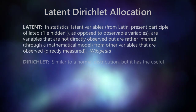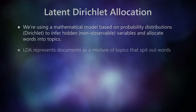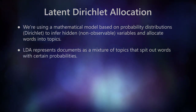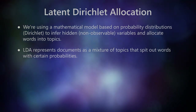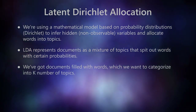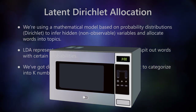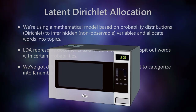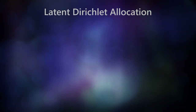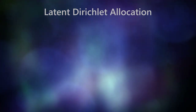So now let's put these words together to see what they mean. We're using a mathematical model based on probability distributions — Dirichlet — to infer hidden, non-observable variables and allocate words into topics. Specifically, LDA represents documents as a mixture of topics that spit out words with certain probabilities. We've got documents filled with words which we want to categorize into k number of topics. Remember the microwave analogy: you don't need to know how the microwave works to make good popcorn. There are several Python libraries which have LDA functionality pre-baked for you — all you've got to do is put the data in and press a button. But I also want to leave you with a little understanding of what's going on under the hood. So let's do a simplified overview of what's happening in the algorithm.